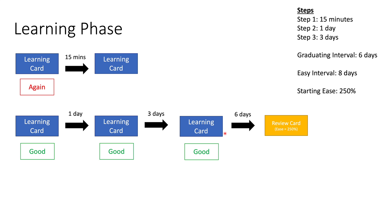How much time passes between when your learning card becomes a graduated review card? This is something called the graduating interval. After you see the learning card and reach the last learning step, you set how much time you want to pass before you see the card again as a review card. Once it becomes a review card, it starts to accumulate ease. All review cards have an ease associated with them, and this ease can change depending on whether the card is hard or easy for you.